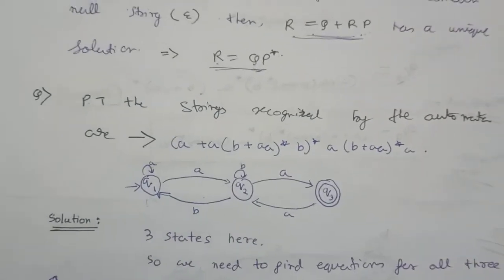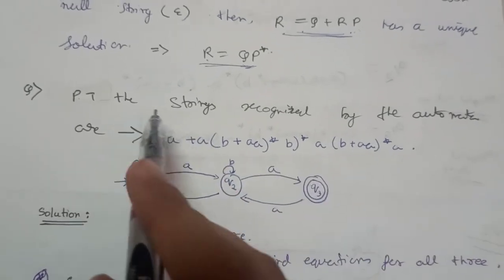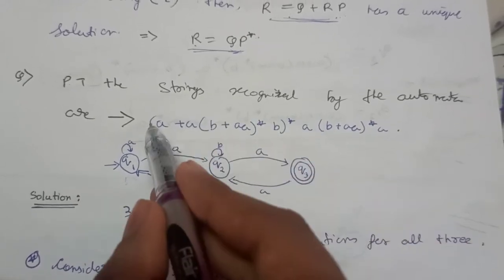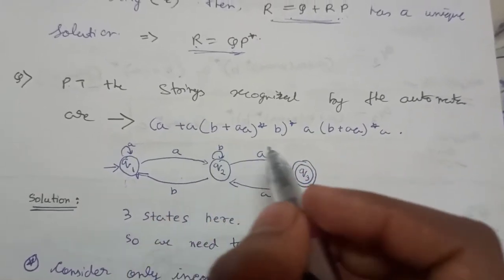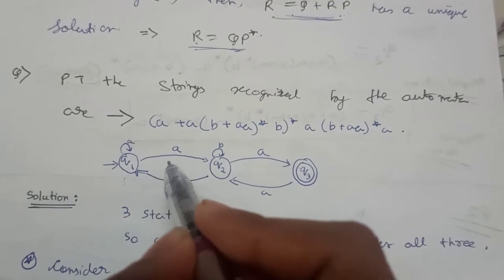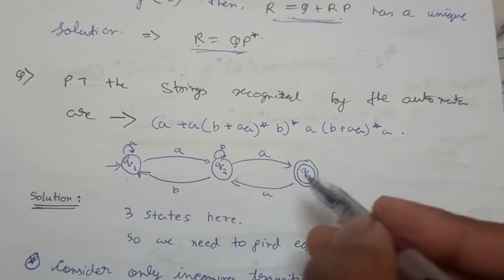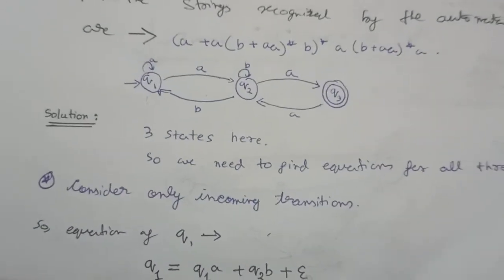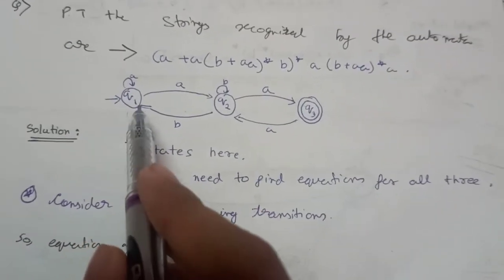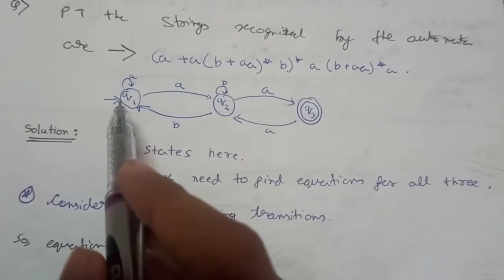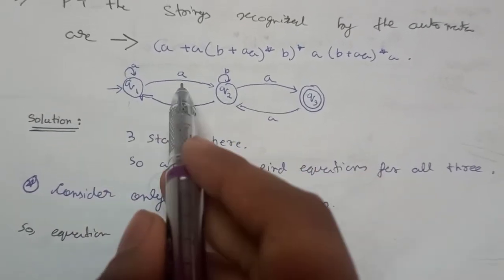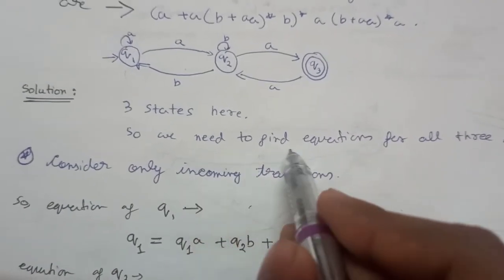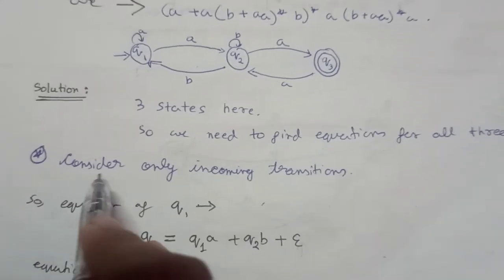Now we'll see through an example. The question is to prove that the strings recognized by this automata match a given regular expression. There are three states Q1, Q2, and Q3. Q1 is the initial state, Q3 is the final state, and the alphabets are A and B. We need to find equations for all three states.